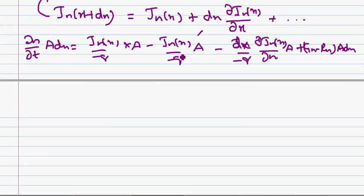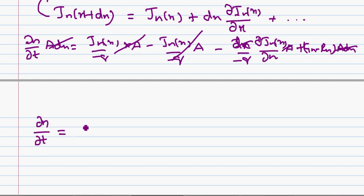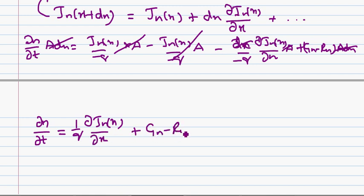After reduction, the jn(x) terms cancel and A·dx is common throughout, so it cancels from both sides. We can now write the continuity equation for electrons as: ∂n/∂t = (1/q)·∂jn(x)/∂x + gn − rn. This is the continuity equation for electrons.